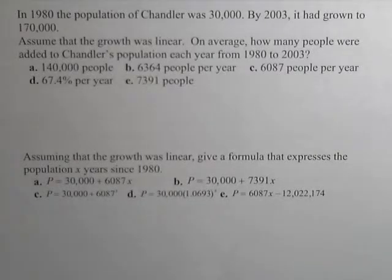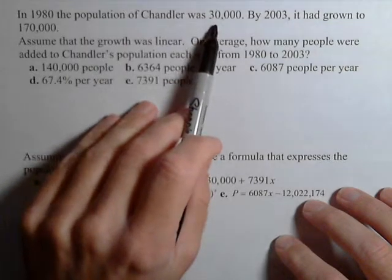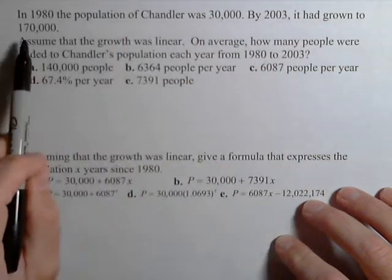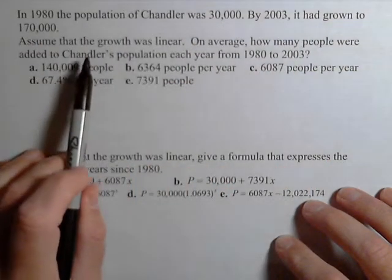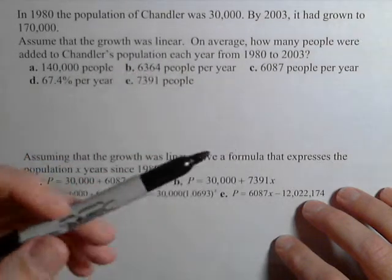Okay, in this video we have two populations. In 1980, the population of Chandler was 30,000. By 2003, it had grown to 170,000. So assuming the growth was linear, on average, how many people were added to the Chandler population each year?